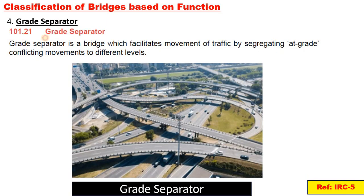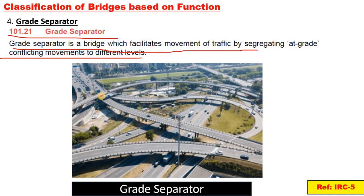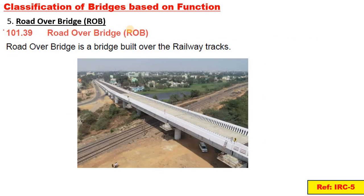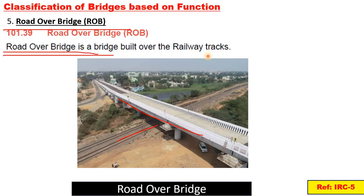Next is a grade separator. A grade separator is a bridge which facilitates movement of traffic at different levels. You can see traffic movement in the grade separator. Then, road over bridge (ROB): a road over bridge is a bridge built over the railway tracks.